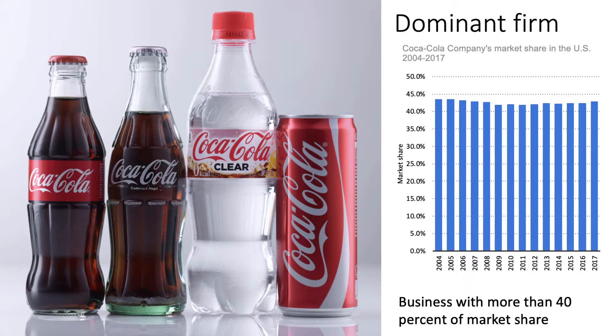Dominant firm is defined as a business that has more than 40% of their defined market. My example is Coca-Cola, whose market share in the US soft drink sector has been fairly stable at around 40–41% over many years. In that sense, Coca-Cola is a dominant firm.